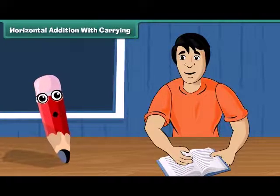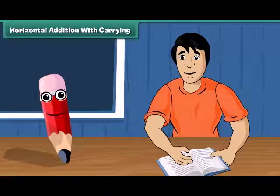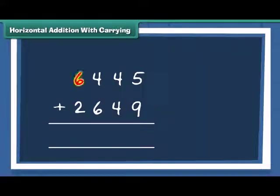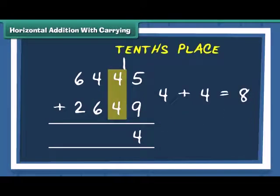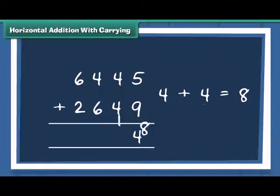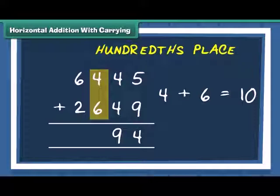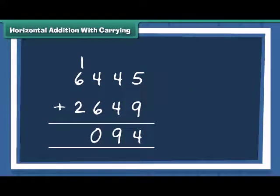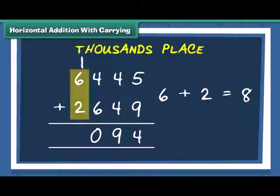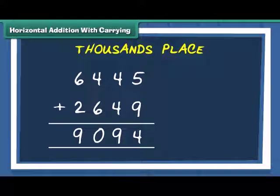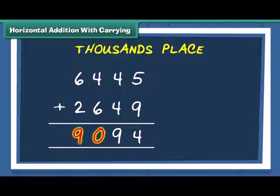Let us practice one more example with a bit of a twist. We have 2 numbers, 6445 and 2649. Add the numbers at 1's place. Now carry 1 to the 10's place. Add the 10's. Then add the numbers at 100's place. Add 1000's to make the final answer. So, the answer to the problem is 9094.